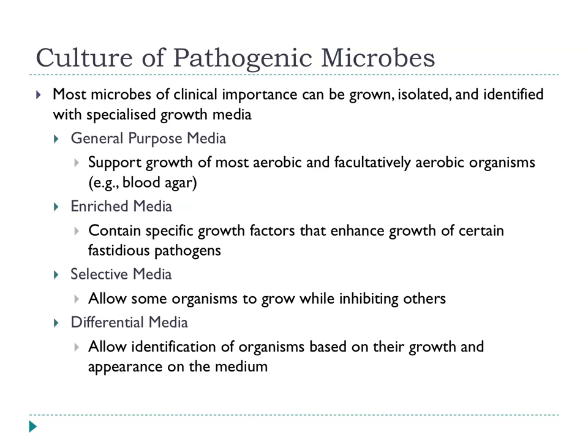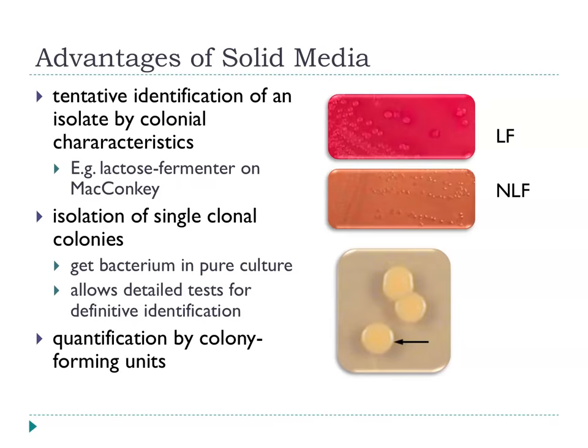There are a variety of types of media: general purpose medium, enriched media — for example adding blood to allow certain organisms to grow, or 'chocolatised' blood plates where the blood is heated so red cells lyse and contents are released. Selective media support the growth of only some organisms. Differential media have indicators that allow differentiation between different bacteria. For example, on MacConkey agar, lactose-fermenting organisms produce deep pink colonies, while non-lactose fermenters give a washed-out orange background colour.